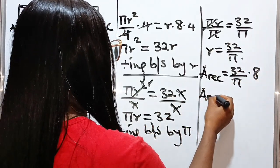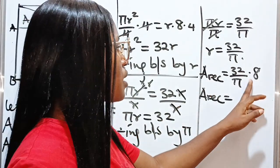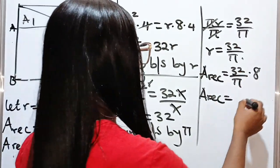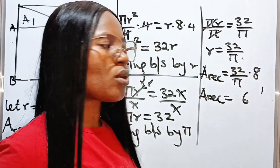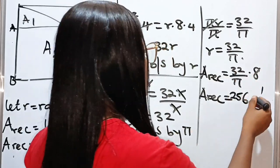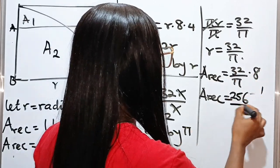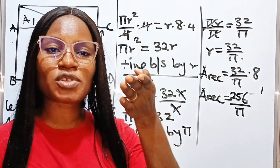So the area of the rectangle is equal to 8 times 2 is 16. 8 times 3 is 24 plus 1 is 25. So we have 256 divided by pi.